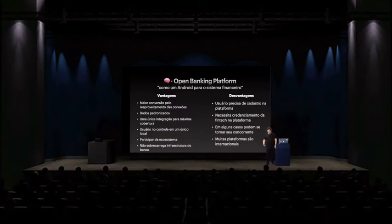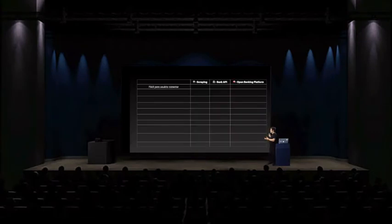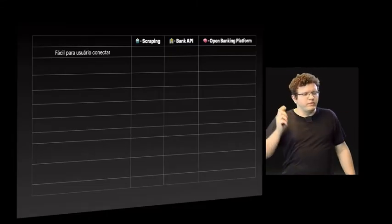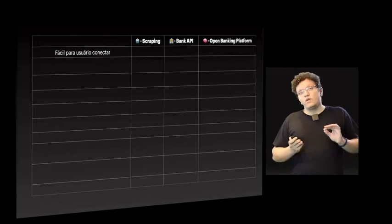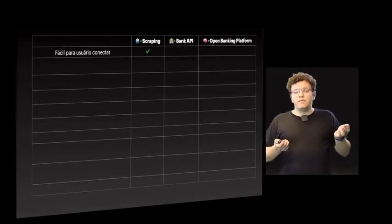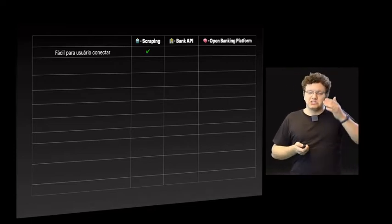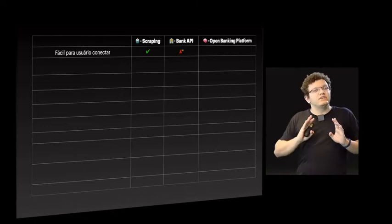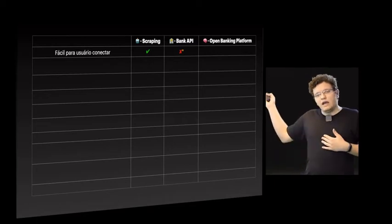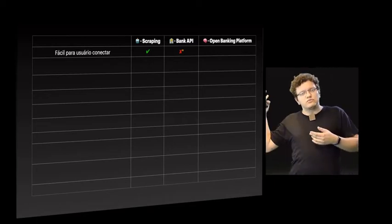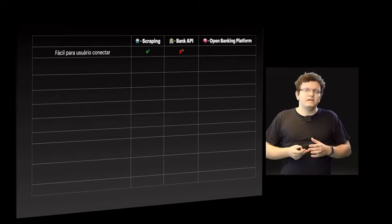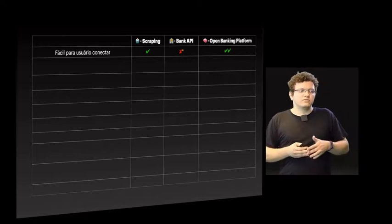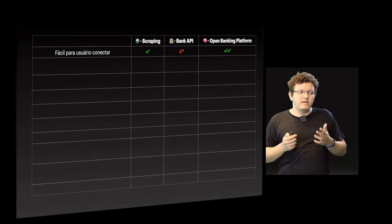Comparando os três numa tabela. Fácil para o usuário conectar: no scraping é bem fácil — agência, conta, senha e conectado. Na API bancária, com asterisco, geralmente não é fácil e varia muito de instituição para instituição. Via plataforma, é muito fácil, especialmente para reaproveitar conexões existentes.